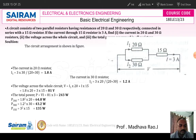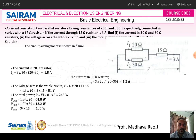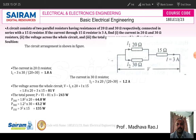The circuit will not be given for this problem; we have to draw the circuit according to the statement. So here, the 20 ohm and 30 ohm resistors are connected in parallel, and that parallel combination is connected in series with the 15 ohm resistor. A current of 3 amperes is flowing in the 15 ohm resistor, and we have to find the current in the 20 ohm and 30 ohm resistors.